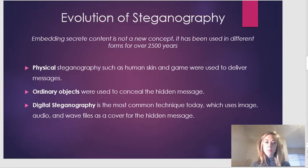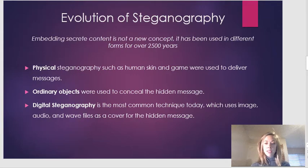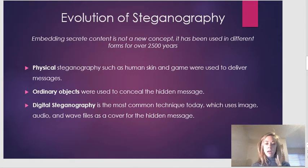The evolution of steganography: embedding secret content is not a new concept — it has been used in different forms for over 2,500 years. Physical steganography such as human skin and games were used to deliver messages. In 440 BC, a Roman general shaved the head of a messenger, tattooed a message on his scalp, and then sent him to deliver it once the hair grew back. Once received, they would shave his head to reveal the message. Prisoners of war have also used Morse code through repeated eye blinking; during the Vietnam War, a prisoner spelled out 'torture' with eye blinking, confirming that the North Vietnamese were torturing American prisoners.